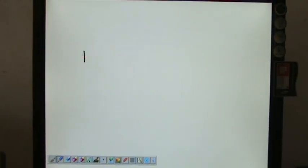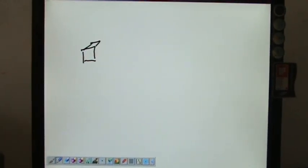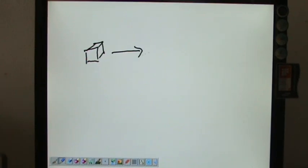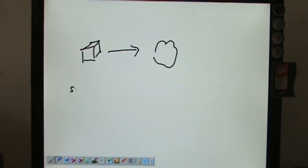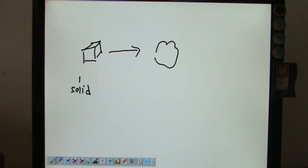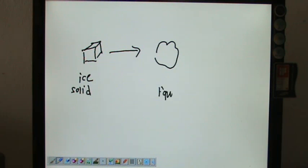If we have a cube of ice and we wish to transform it into liquid, let's call this solid, which in this case is ice, and then this is a liquid, which in this case is just plain water.